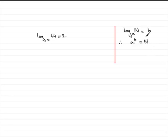This is the definition of a log and we use it here. You can see that the a is the x, n is the 64 and b is the 2. So therefore, what we have is that 64 must equal x to the power 2. In other words, x squared.